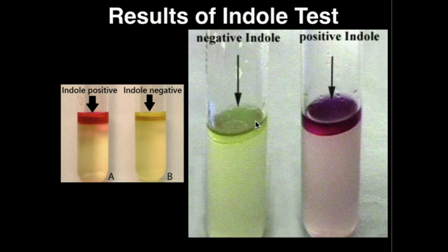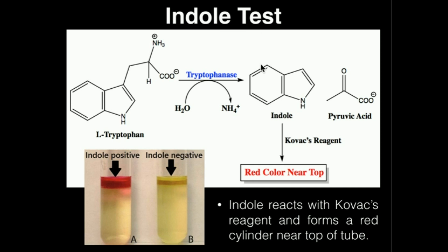Overall the Indole test is a fairly straightforward, simple test to interpret. As long as you produce indole, Kovacs reagent will produce that red-purplish color near the top of the tube. Make sure to watch the demonstration video as well.